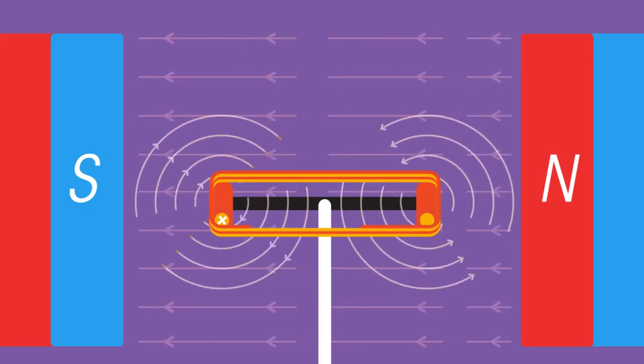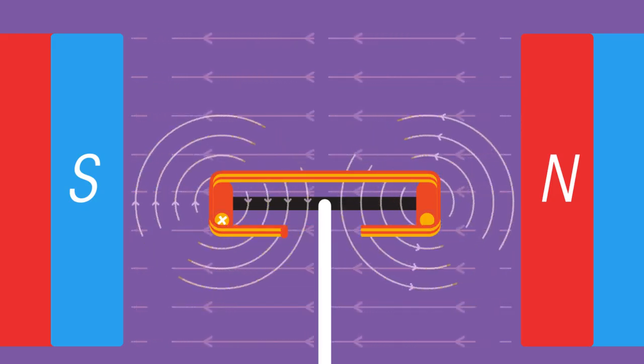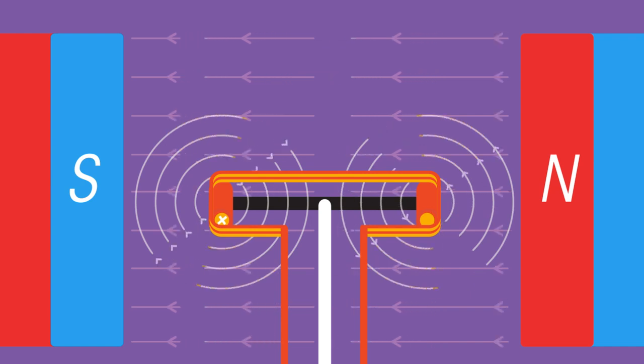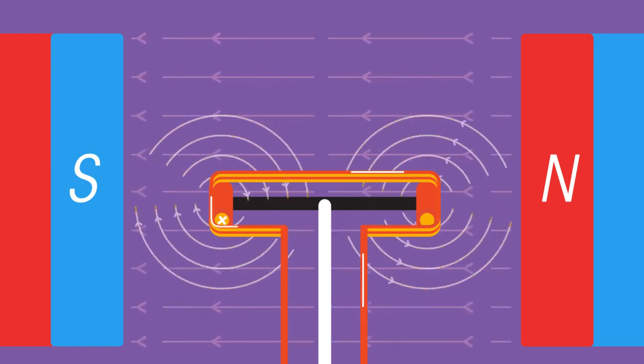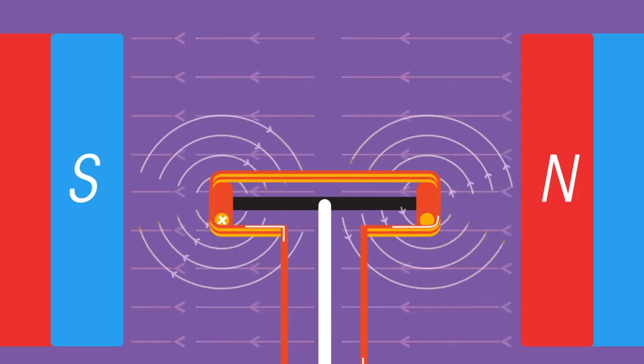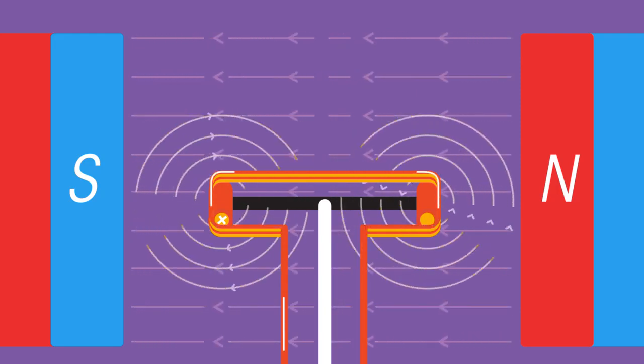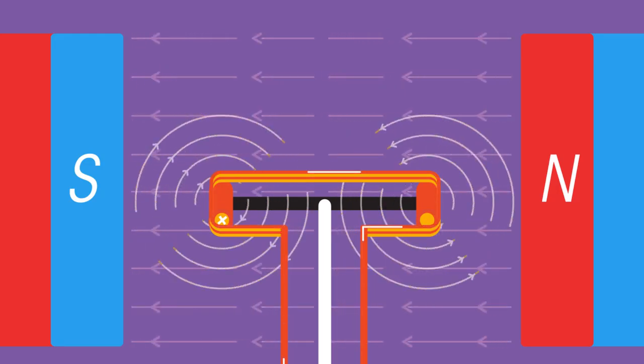The clever bit is how to supply a current to a spinning coil so that it always flows in the same direction, ensuring that the upward and downward forces are always on the same side.